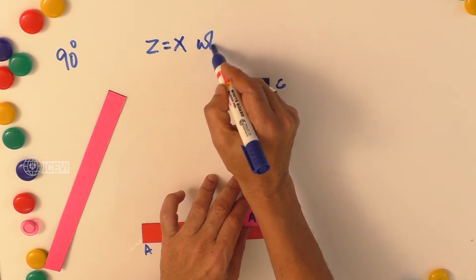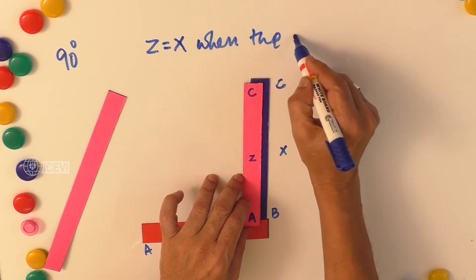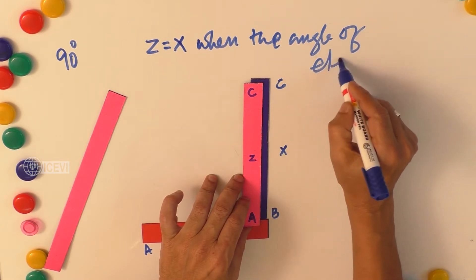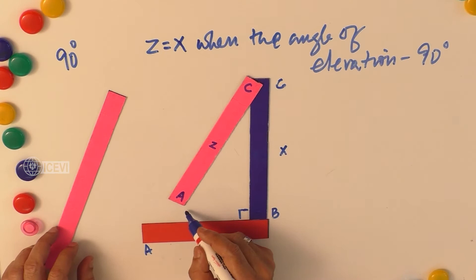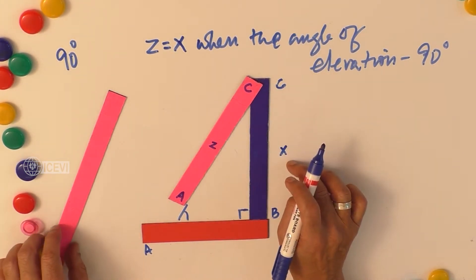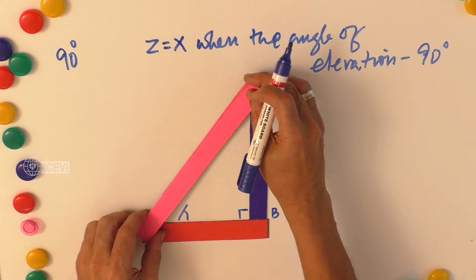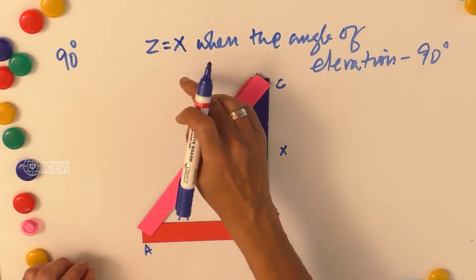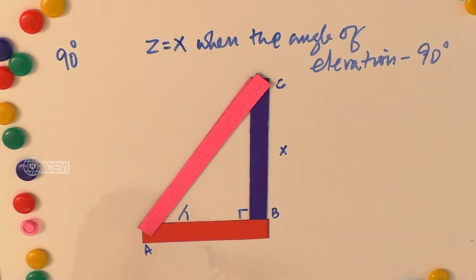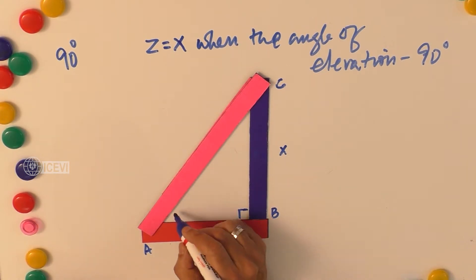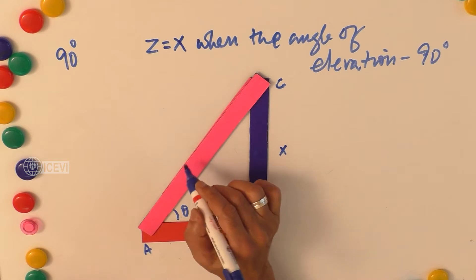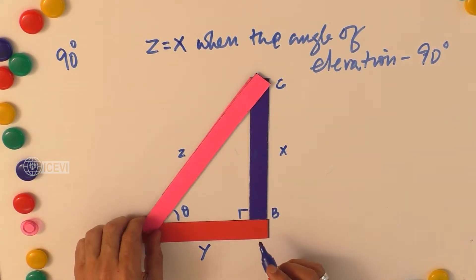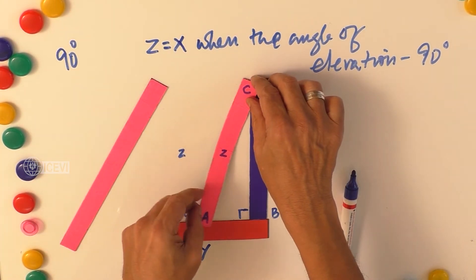So when it is 90 degrees, AC is identical with BC and Z becomes X. When the angle of elevation is 90 degrees, Z equals X. When the angle of elevation is less than 90 degrees, Z is not equal to X. We can use this logic to define sin 90°, cos 90°, tan 90°, and other trigonometric ratios. Let us call the base as Y. When angle A (theta) is less than 90 degrees, Y is different from X, which is different from Z.